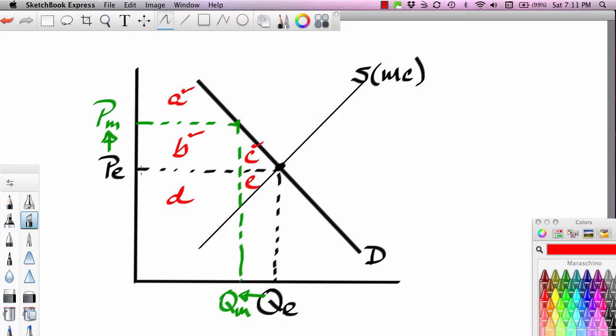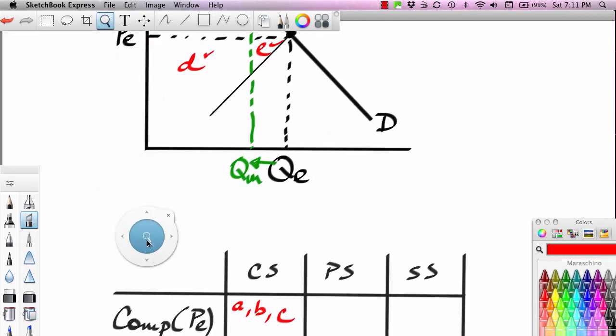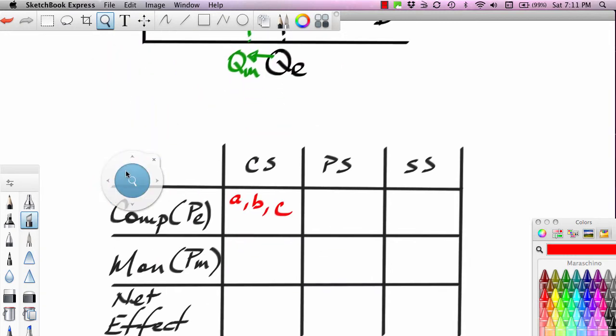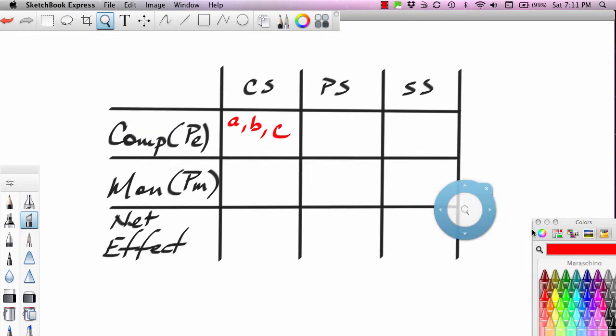Producer surplus is below the price line, above the supply curve. So that would be D and E. So let's go ahead and scroll back down. Complete our table. The first row of our table, I should say. So this will be A, B, and C. This would be D, comma, E. This will be A through E.